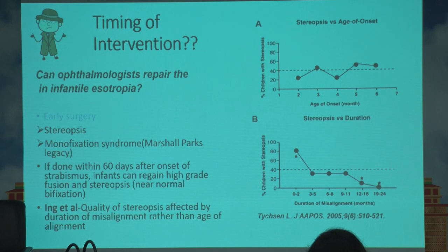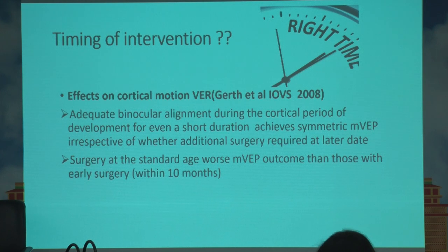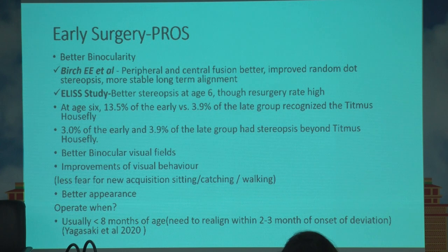Whatever is required is to align the eyes as early as possible after the onset of esotropia. Various studies show the quality of stereopsis would be better in those cases. There have also been studies showing the effect of early intervention on cortical motion VEPs, demonstrating that adequate binocular alignment done during the critical period gives better outcomes on multifocal VEPs. Early surgery within 10 months gives better results, indirectly indicating that binocularity can develop if operated at that age.